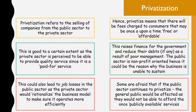Now, what could be a limitation? The boxes highlighted in red signify some of the limitations. This would lead to some job losses in the public sector because it is now taken over by the private sector, and they would want to ensure that the business model is rationalized and made more efficient.